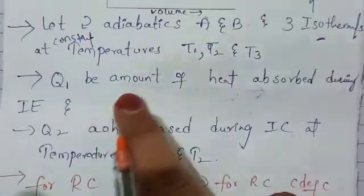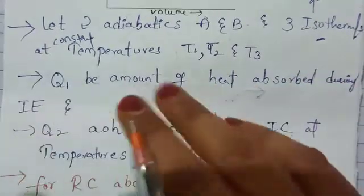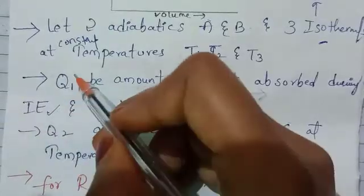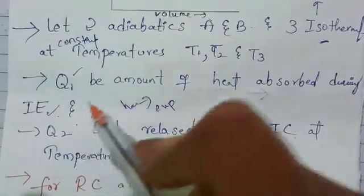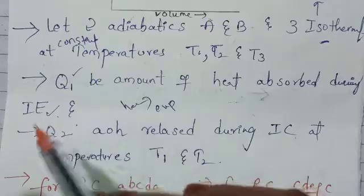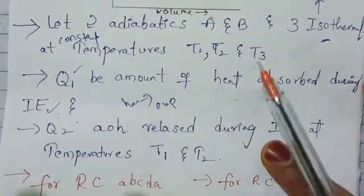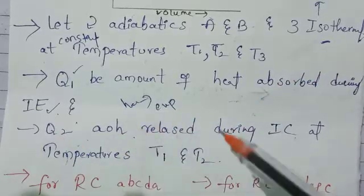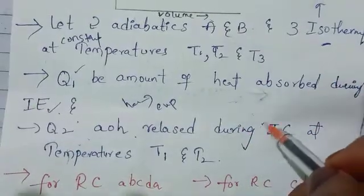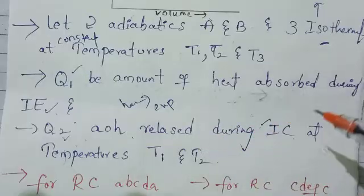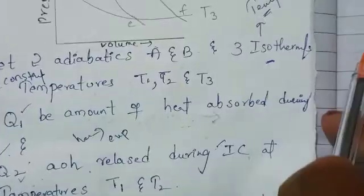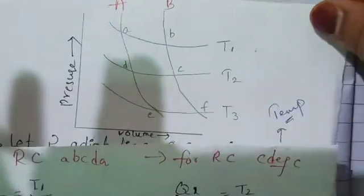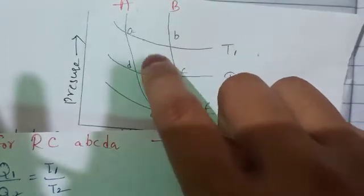Here, Q1 is the amount of heat absorbed during the isothermal expansion. And in the same way, Q2 is the amount of heat released during the isothermal compression at temperatures T1 and T2. So here we have isothermal compression and isothermal expansion at temperatures T1 and T2. This is a reversible cycle.